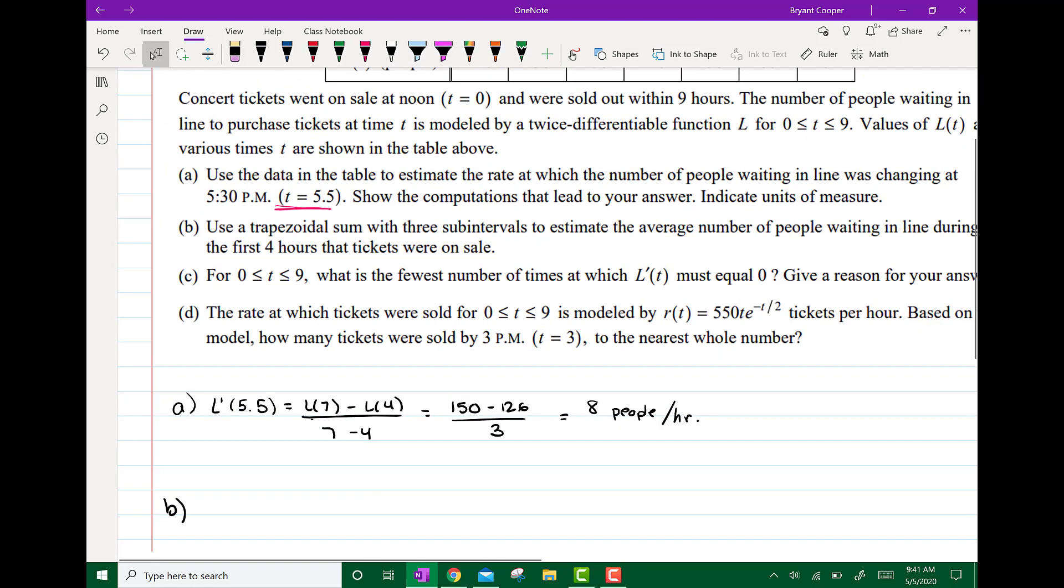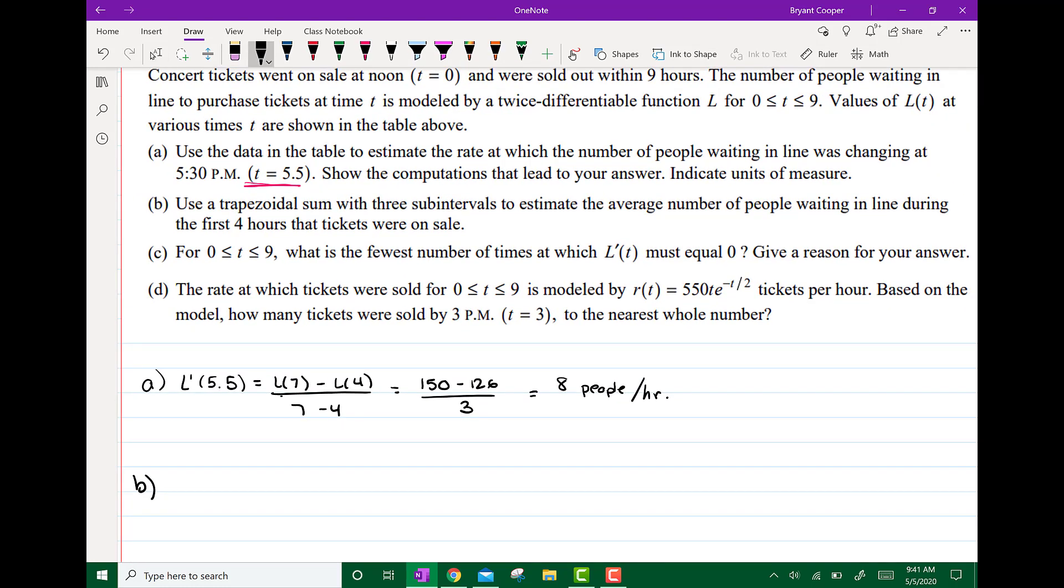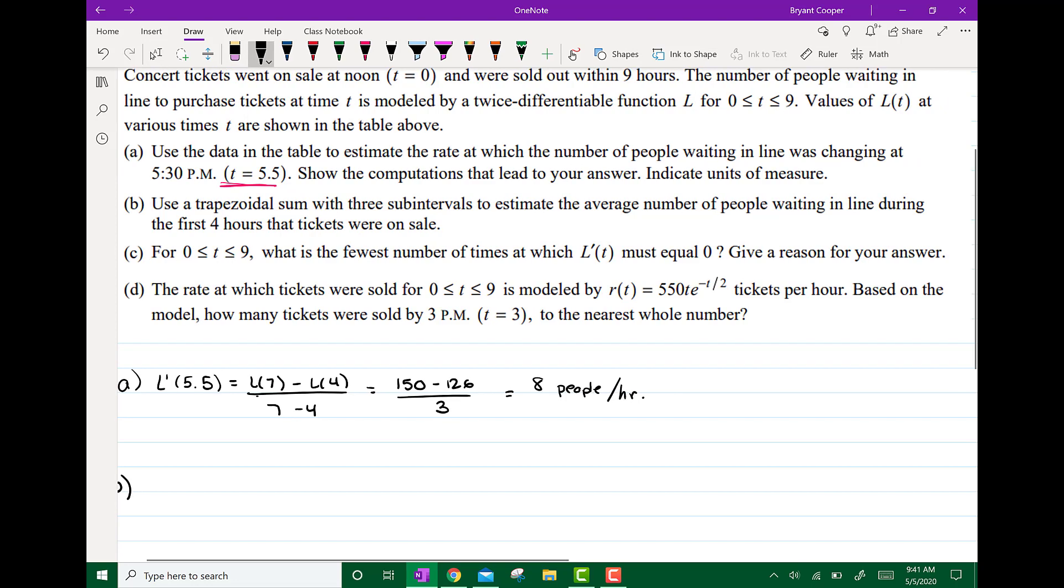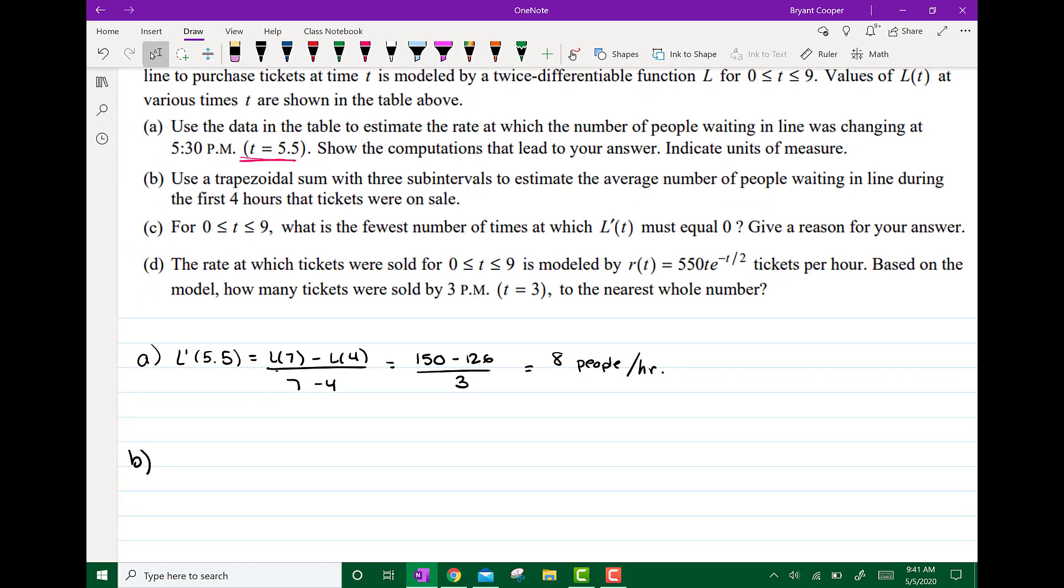Part B. Use the trapezoidal sum with 3 subintervals to estimate the average number of people waiting in line during the first 4 hours. So if I want to use a trapezoidal sum to find the average value, we can think of it like this.